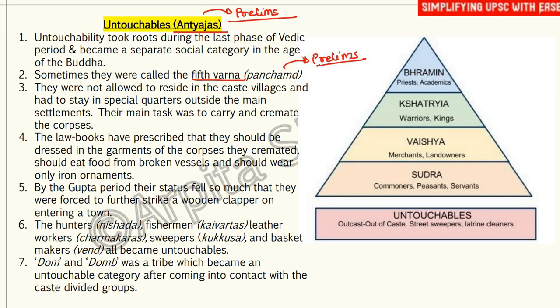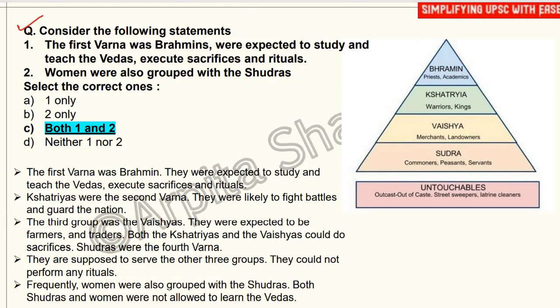Hunters known as Nishad, fishermen known as Kaivarta, leather workers known as Charmakara, sweepers known as Kukusa, and basket makers known as Vendh — all became untouchables. The Dome was a tribe which became an untouchable category after coming into contact with caste-divided groups. The misunderstanding and misinterpretation of the Varna system led to division based on the caste system.